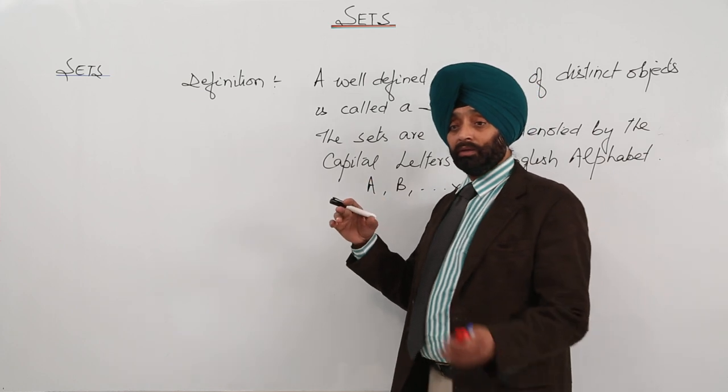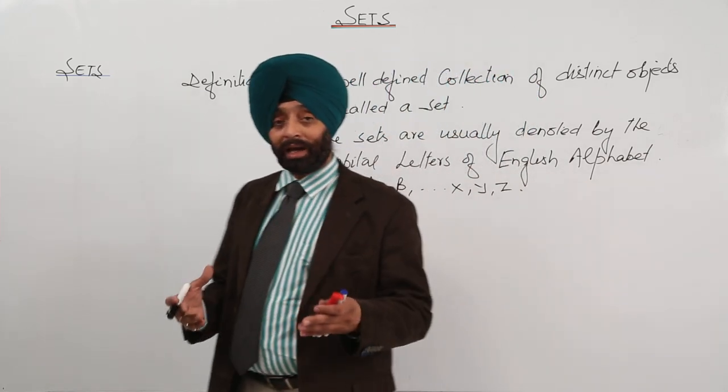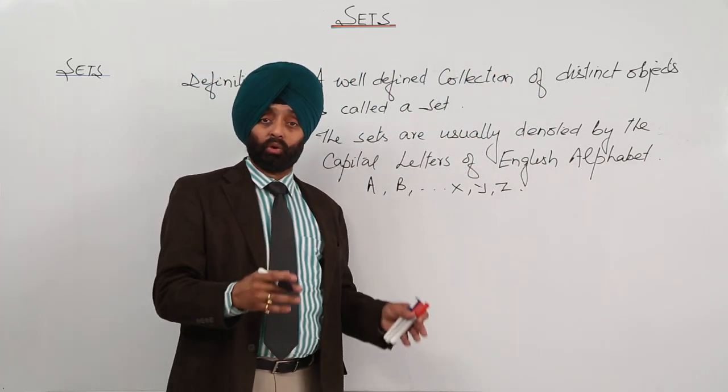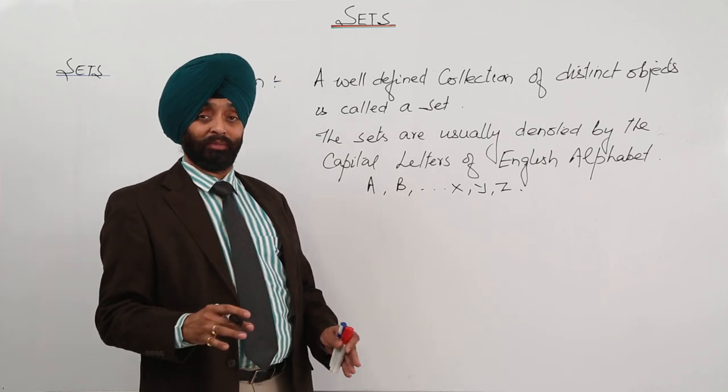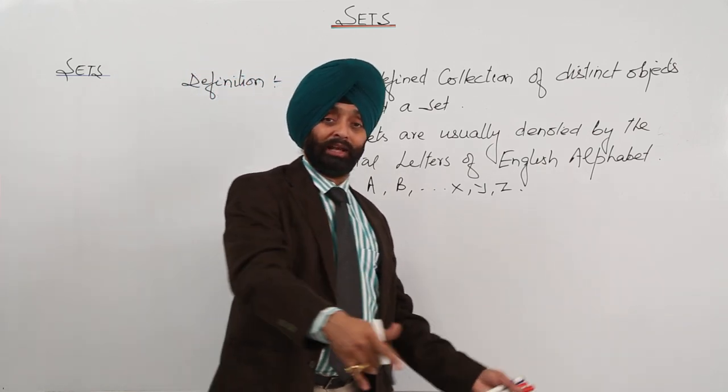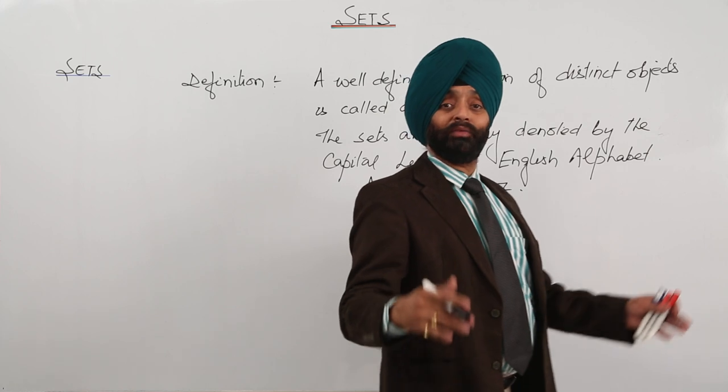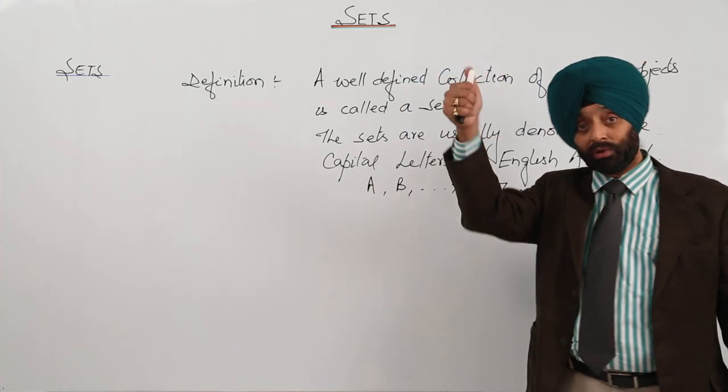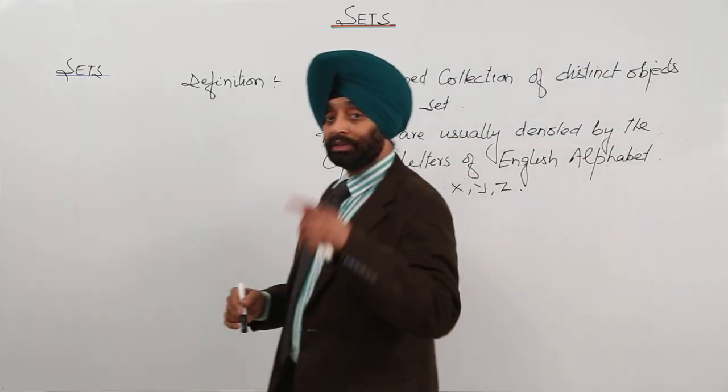But, if I am saying, brilliant students are the students who have scored above 90 in mathematics. Now, can you tell me? Five students, five brilliant students, now you can. Now you can. So, this is a set.